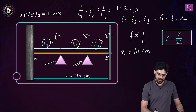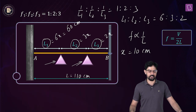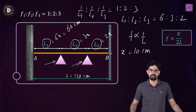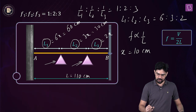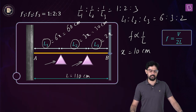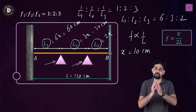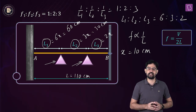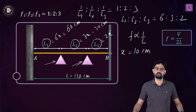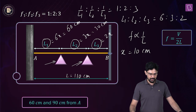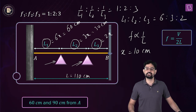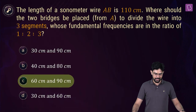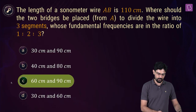So L1 = 60 cm, meaning the first bridge should be placed at 60 cm from point A. L2 = 30 cm, so the second bridge is placed at L1 + L2 = 90 cm from end A. The bridge positions are 60 cm and 90 cm from end A, and option C is the right answer.